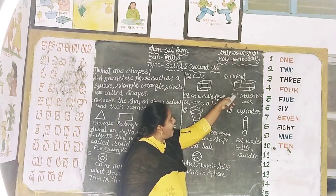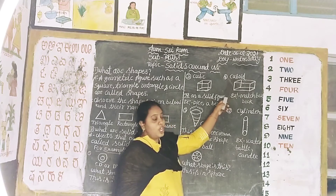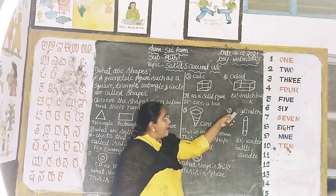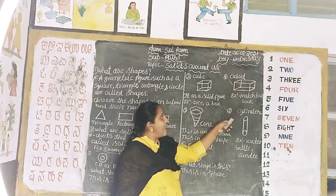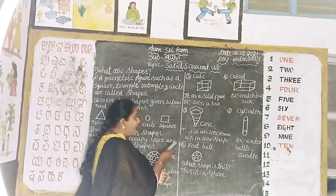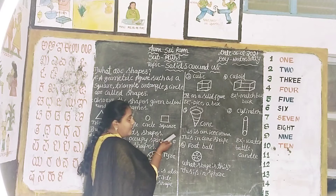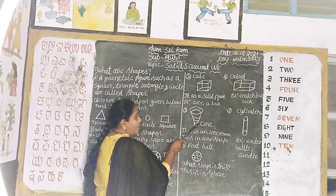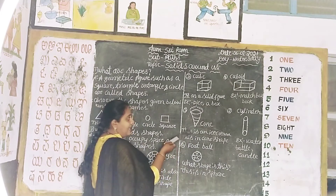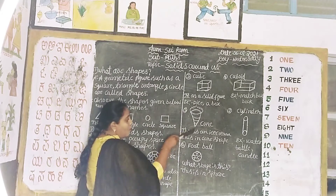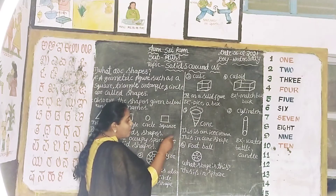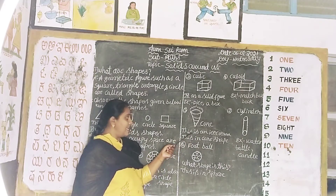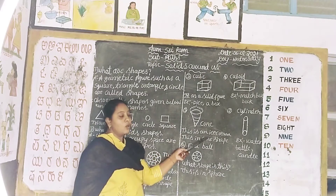C-U-B-O-I-D. What is this? This is an ice cream. This is in cone shape. What is this? This is an ice cream in cone shape.